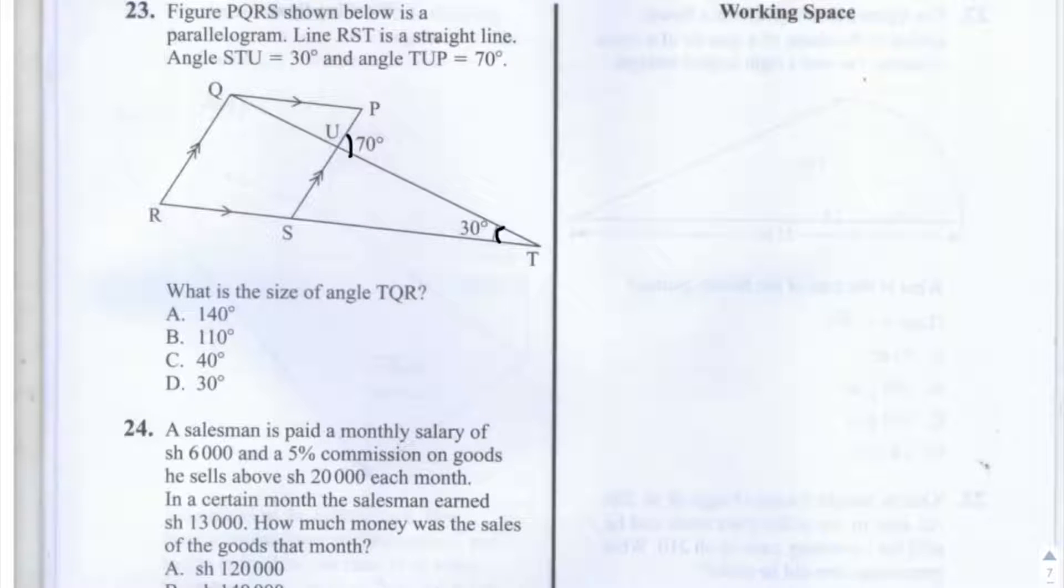First, about corresponding angles. If you have two parallel lines like this, and any straight line that crosses them like so, then this angle here and this angle here will be equal. So this angle A and this angle B are equal. So A equals B.